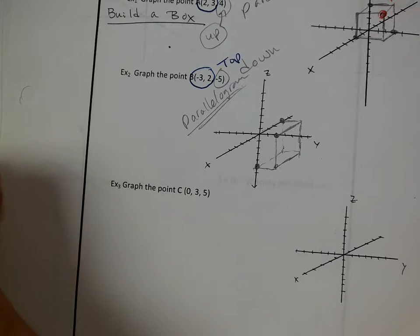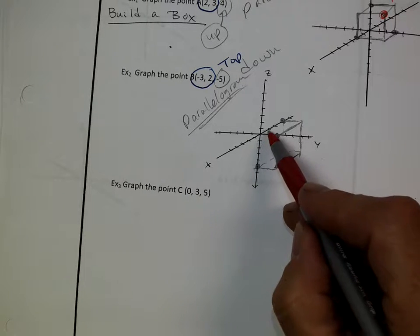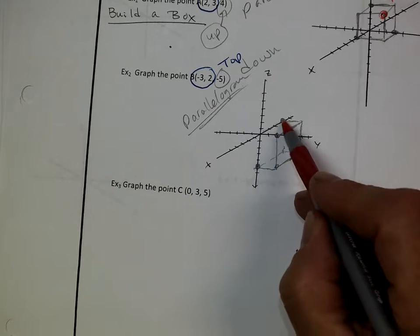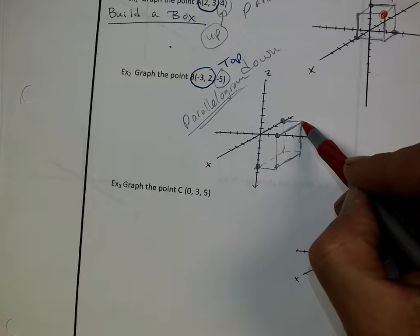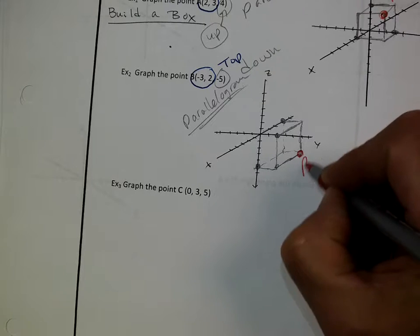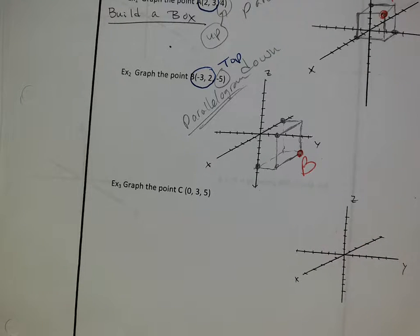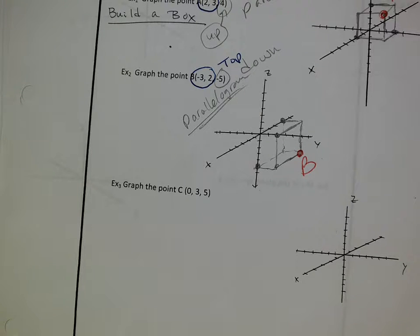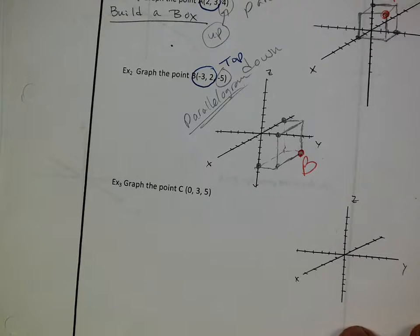Now point B should be back 1, 2, 3 on x, over 1, 2 on y, and down 1, 2, 3, 4, 5 on z. There's point B. Did you get it? Who got it? Thumbs up. You guys are a good group — this is much better than I've seen in a lot of years.